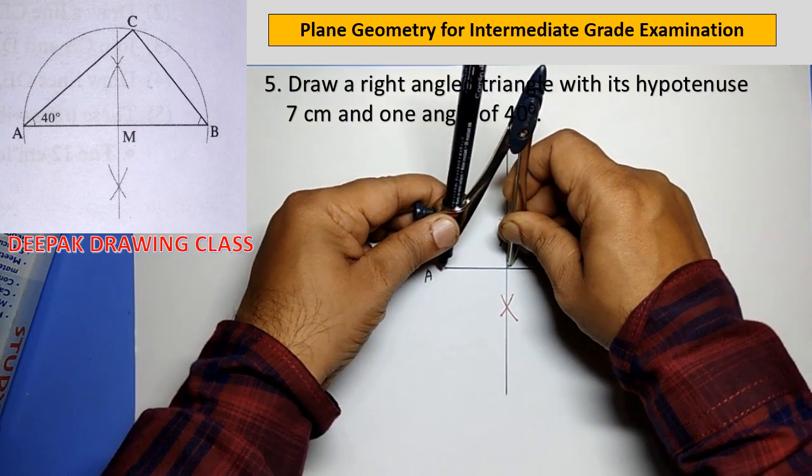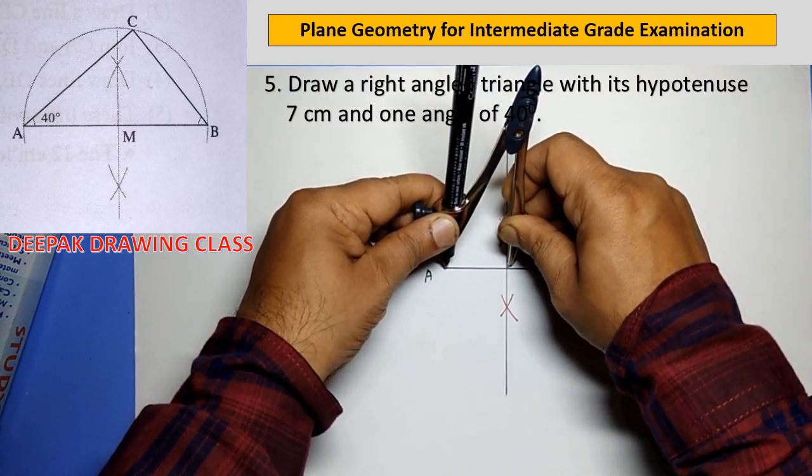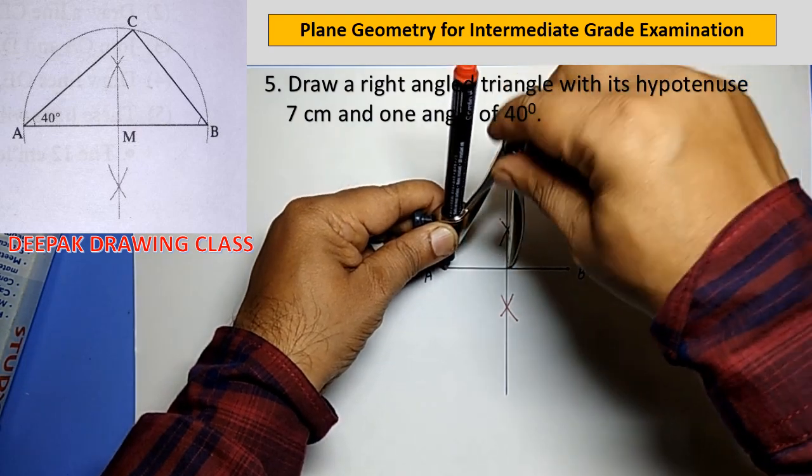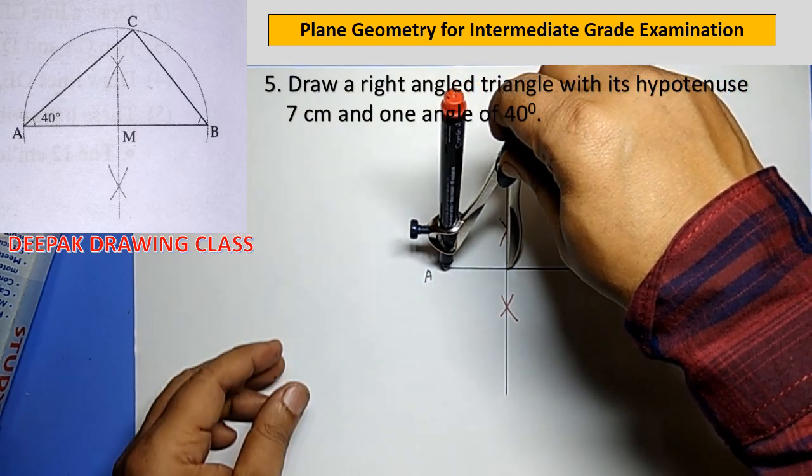Now with point M as center and radius equal to length MA, draw a semicircle.